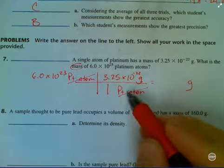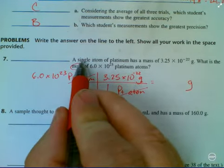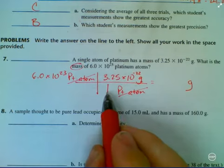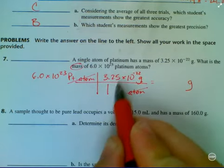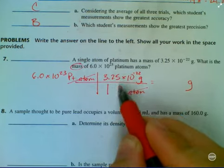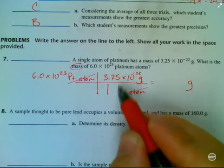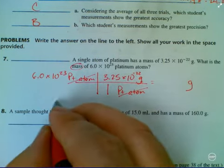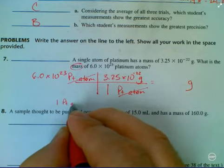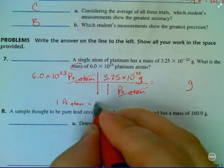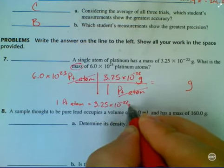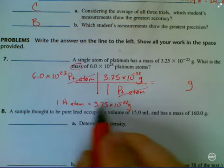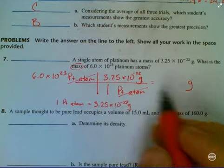So where do I get this? Look at this phrase here. A single atom of platinum, this is a single atom of platinum, has a mass of this. So this is equal to this. Statement of equality. Sound familiar? This conversion factor is based on the statement of equality. One platinum atom is equal to 3.25 times 10 to the negative 22 grams. So that's my statement of equality. I have turned this into a conversion factor.